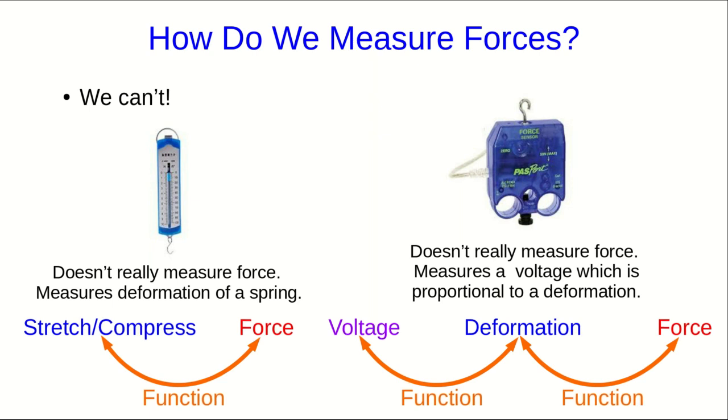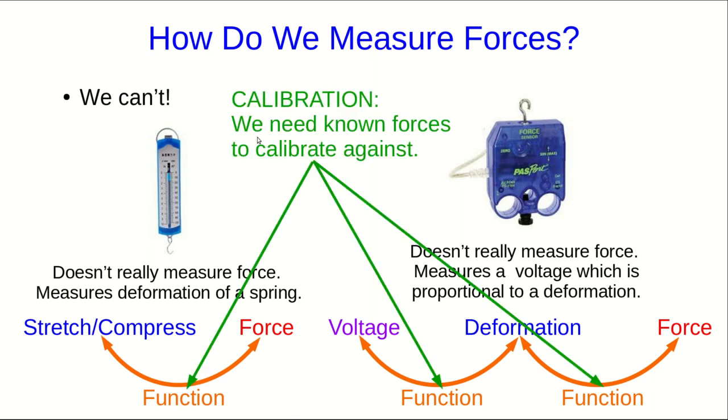What we have here is a calibration problem. We need to know these functions that connect the state changes of these objects with the forces that are being exerted on them. And to determine what these functions are, we would need to test against known forces to carry out a calibration. Well, that means we need some known forces. This is sort of like a chicken and egg problem. How do we get the known forces so that we can measure forces?